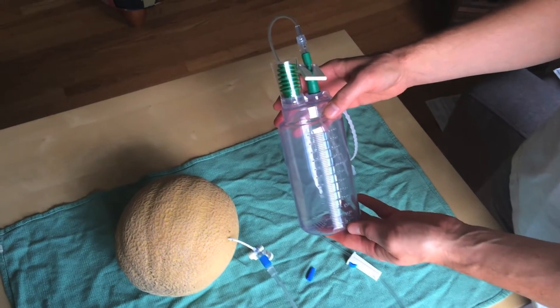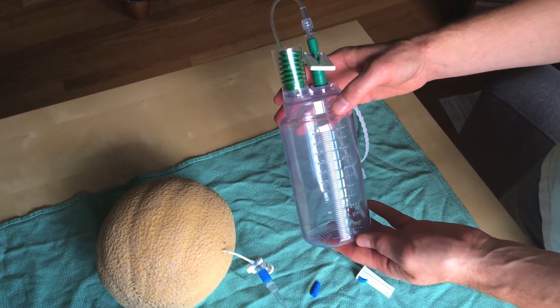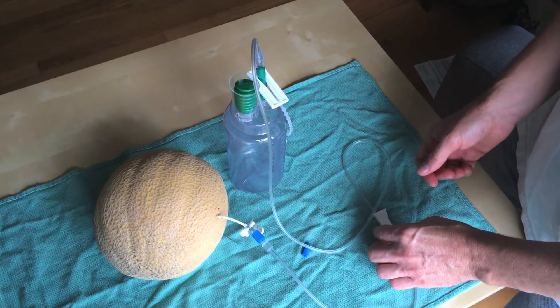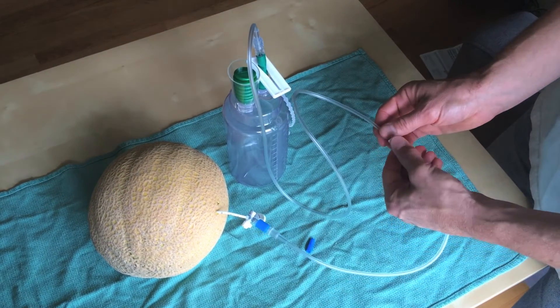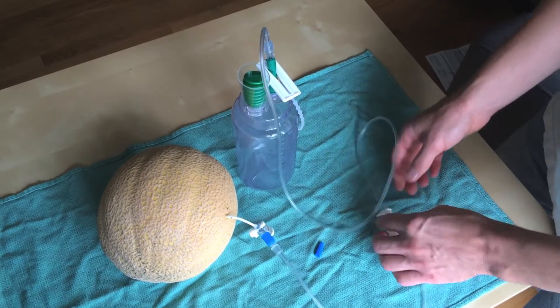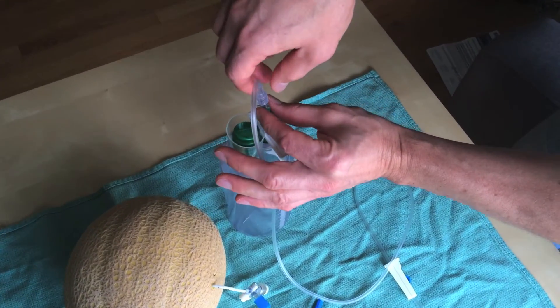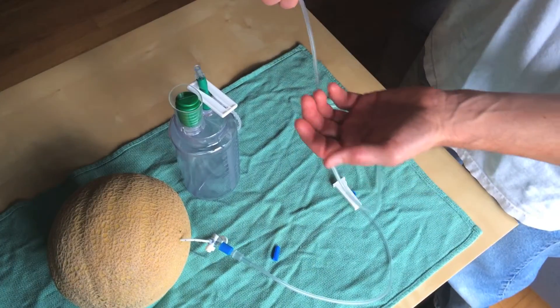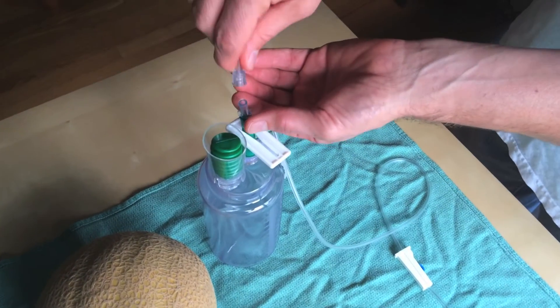Each bottle holds 600 ml and costs $27. If further drainage is needed, clamp the tubing and disconnect the full bottle at the luer lock at the top of the bottle. You can then reconnect a fresh bottle using the tubing you've left in place.